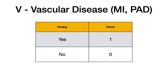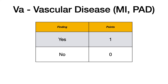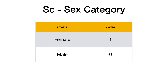The V stands for vascular disease — it's helpful to think of it as VA to avoid confusing the A in CHADS with the A in VASC, so that second A we essentially ignore. Vascular disease includes a history of MI or peripheral artery disease, or any type of vascular compromise — one point if yes, zero if no. The last S is really SC for sex category: female scores one point, male scores zero points.